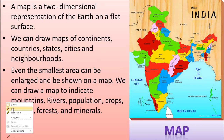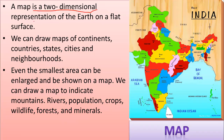Now let's see what is a map. A map is a two-dimensional representation of the earth on a flat surface. We can draw maps of continents, countries, states, cities, and neighborhoods. Even the smallest area can also be enlarged and shown on a map — for example, the map of Gujarat or even Surat. So even smaller areas can be drawn on a map.